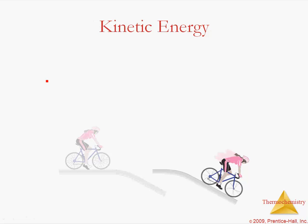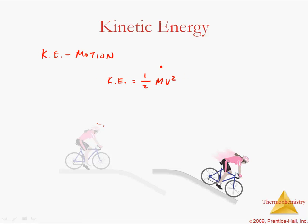Kinetic energy has to do with motion. Let's review how we calculate kinetic energy — you might remember this from integrated science. It's one half mv squared, where m is mass and v is velocity. If you know the mass and the velocity of an object, you can calculate how much kinetic energy that object has.